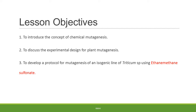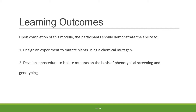Today's lesson plan focuses on the following objectives. The first is to introduce you to the concept of chemical mutagenesis. The second is to discuss the experimental design for plant mutagenesis using a chemical. The third is to develop a protocol for mutagenesis of an isogenic line of Triticum species using ethylmethanesulfonate. Upon completion of this module you should demonstrate the ability to design an experiment to mutate plants using a chemical mutagen and develop a procedure to isolate mutants on the basis of phenotypical screening and genotyping.